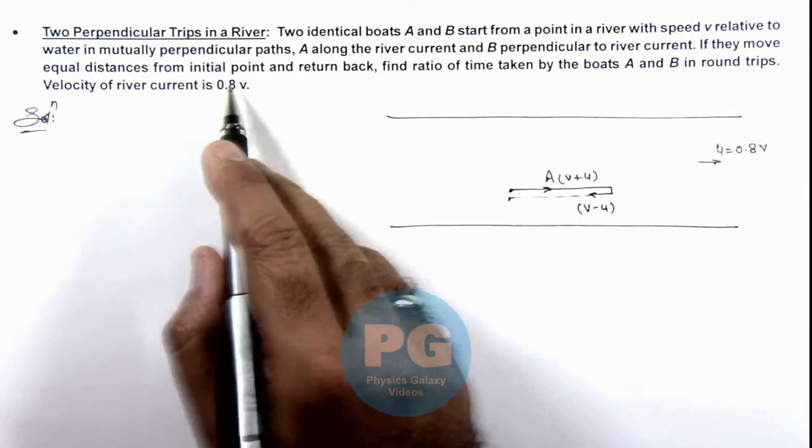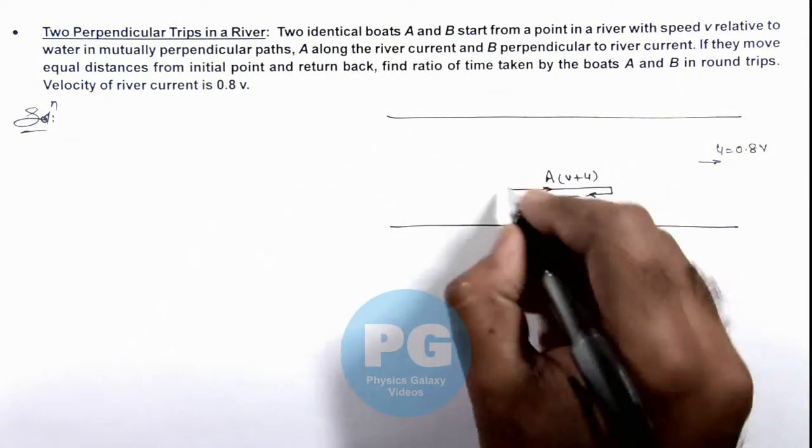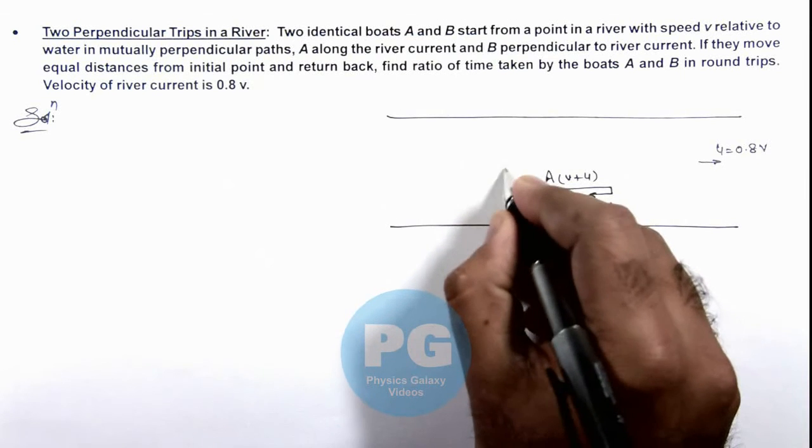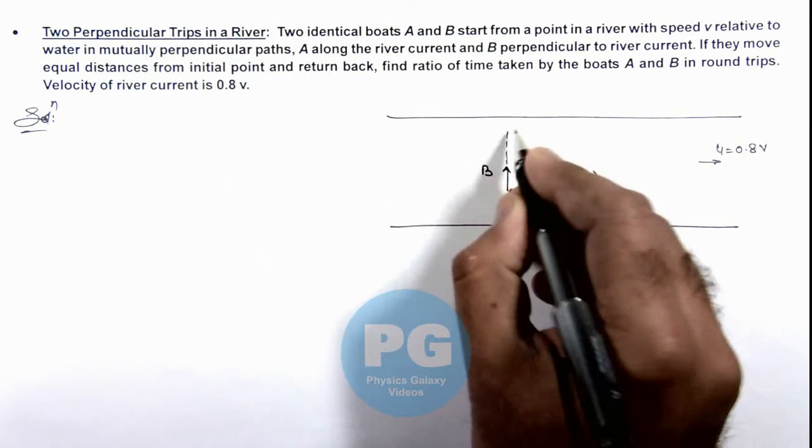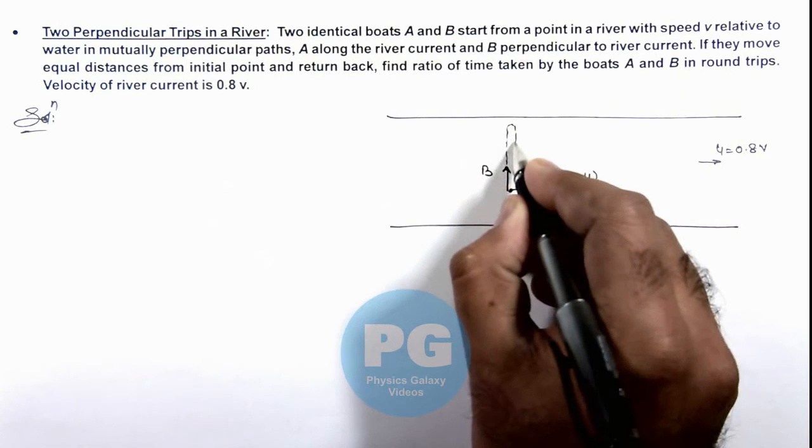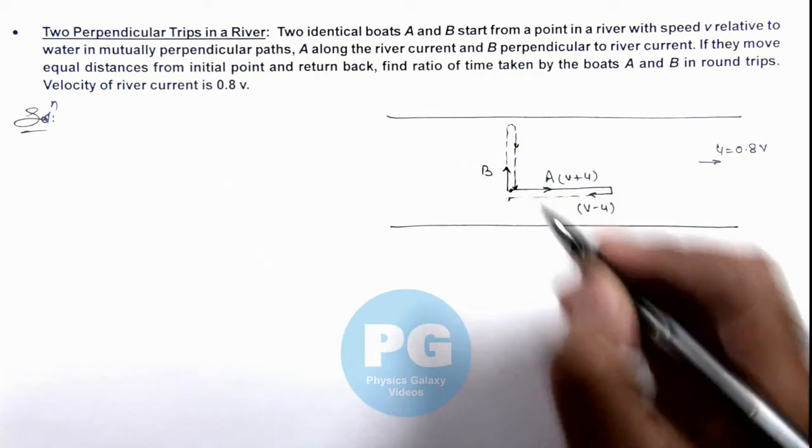And we are given if boat B is moving perpendicular to river current, then boat B is moving in this direction. It goes the same distance and then it returns back and comes back to the same point.